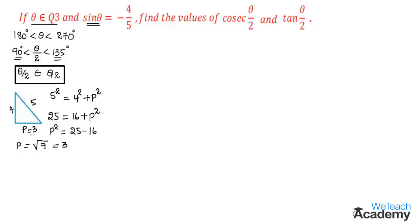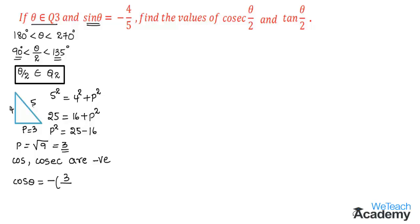Since theta belongs to quadrant 3, the trigonometric ratios cosine and cosecant will be negative. Therefore cos theta equals minus of the adjacent side divided by the hypotenuse, which is minus 3 by 5. So cos theta equals minus 3 by 5.